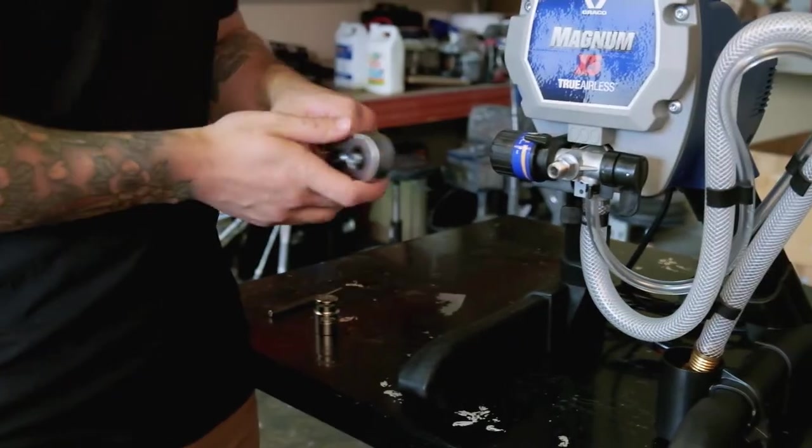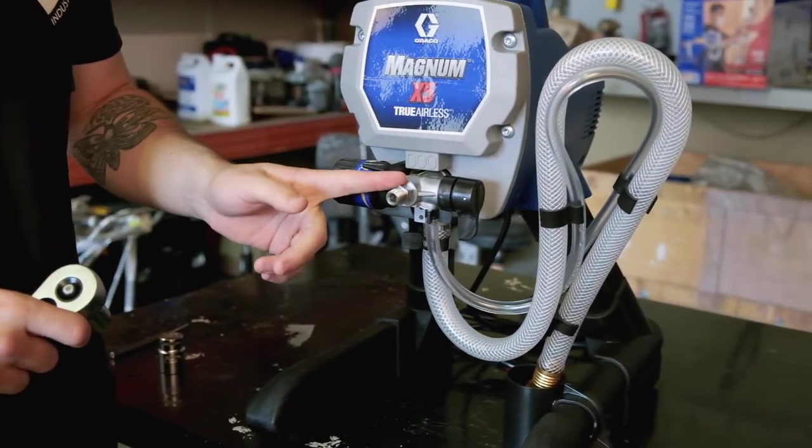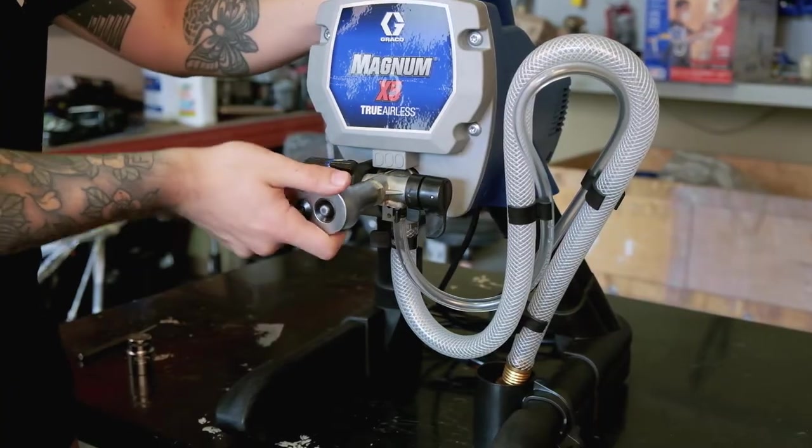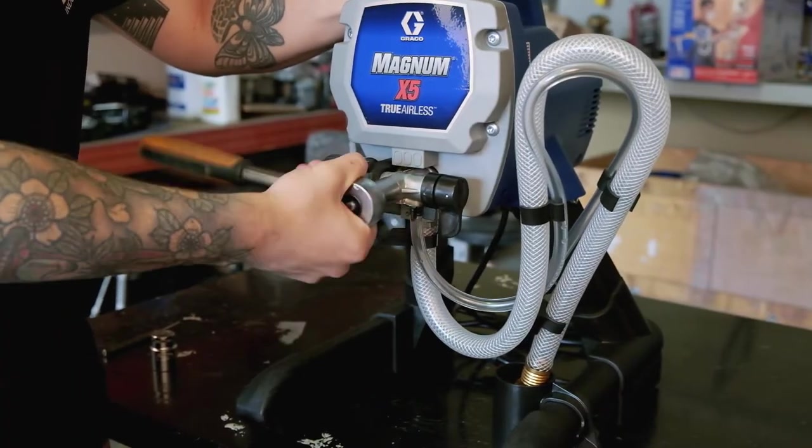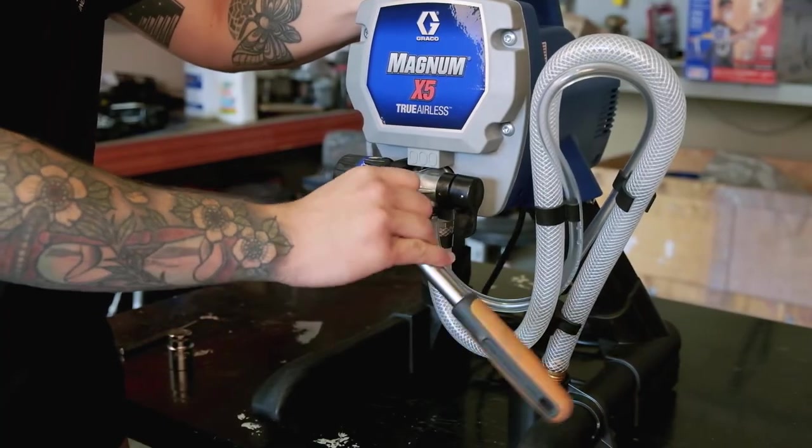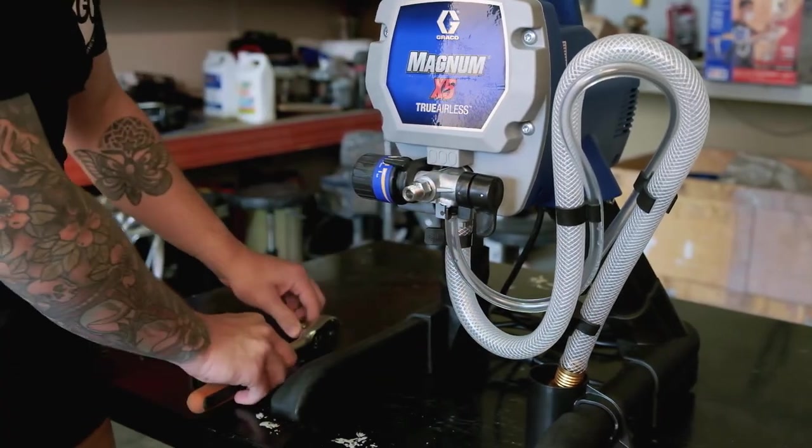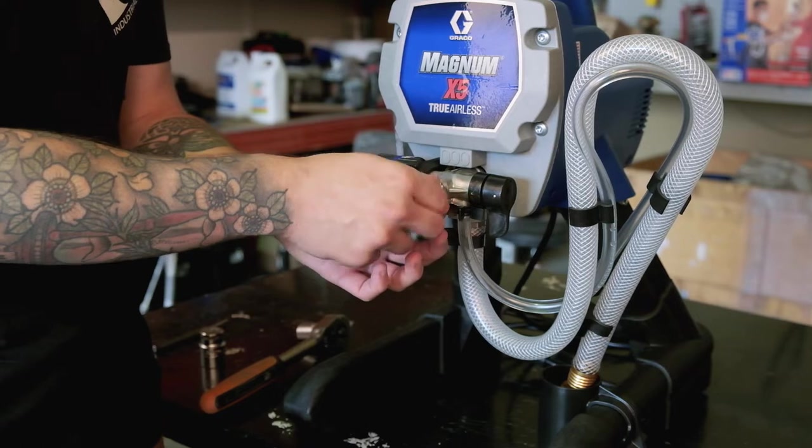So the first step is we're going to be putting our 16 mil socket on and we're just going to be taking out this outlet valve here. Don't undo it all the way just until it's loose enough to get it off with your hands.